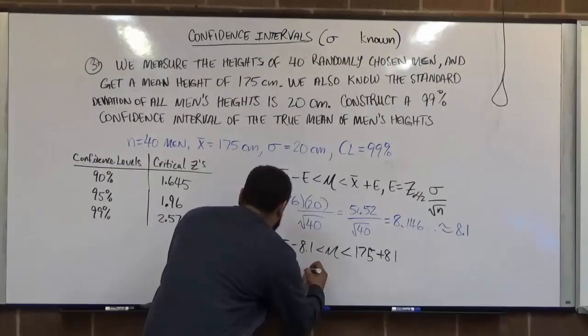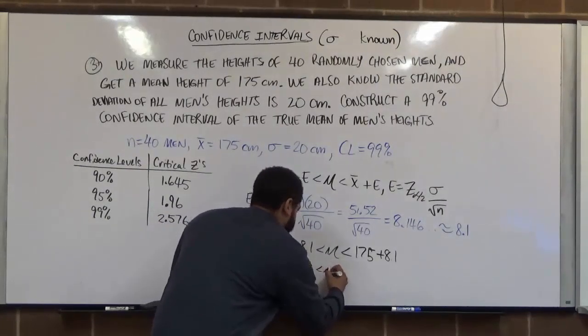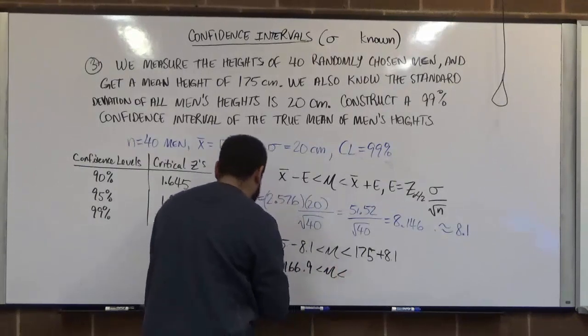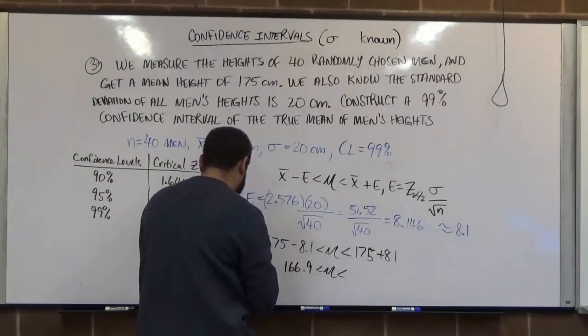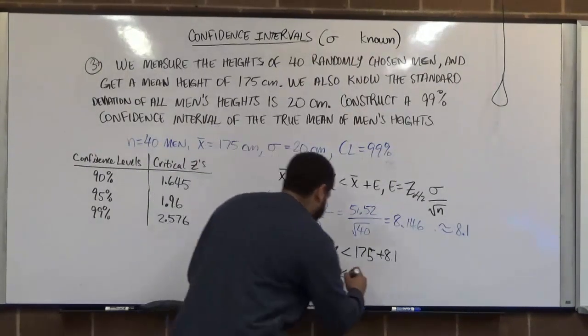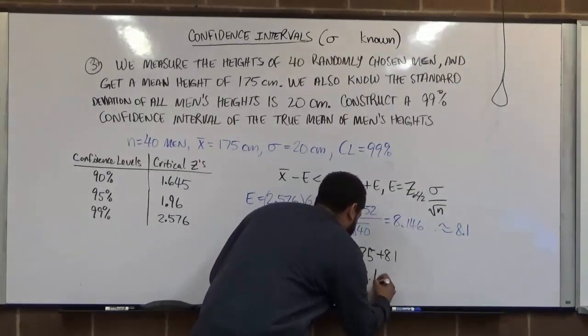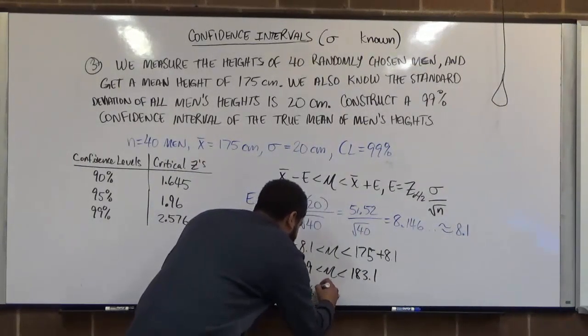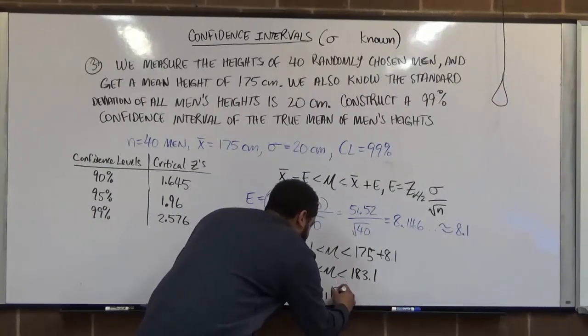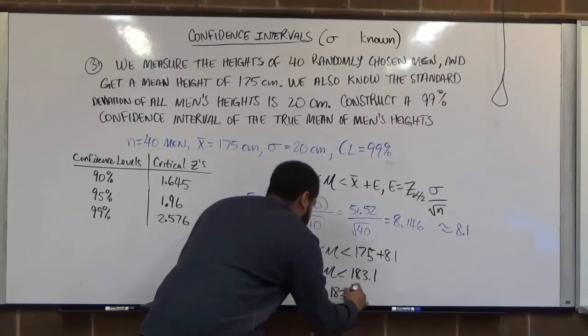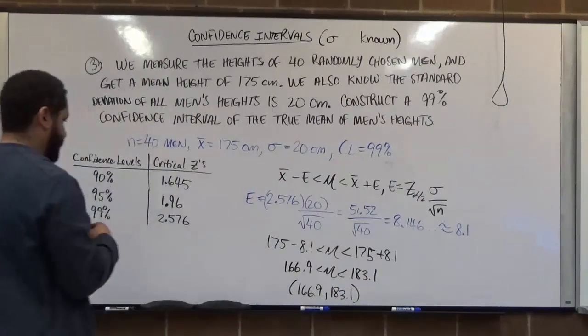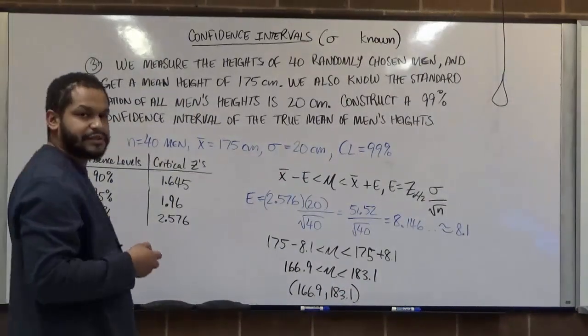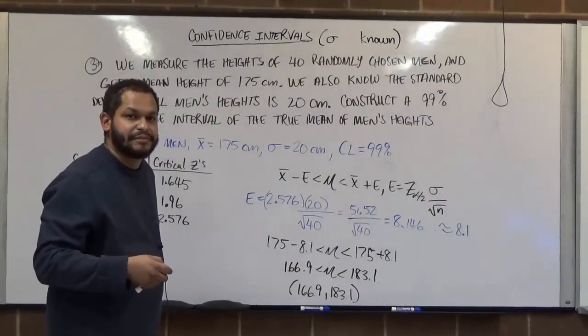183.1. And so our confidence interval for the true mean of all men's heights is between 166.9 centimeters to 183.1 centimeters.